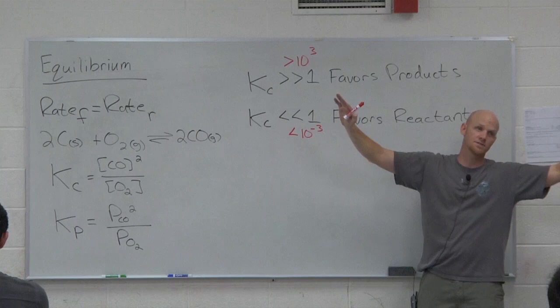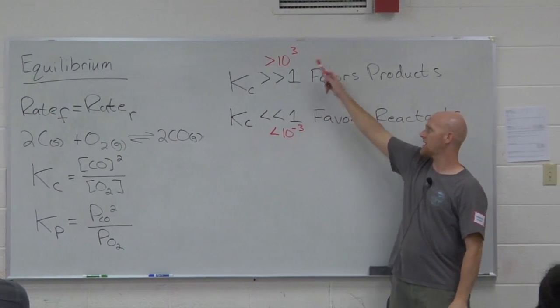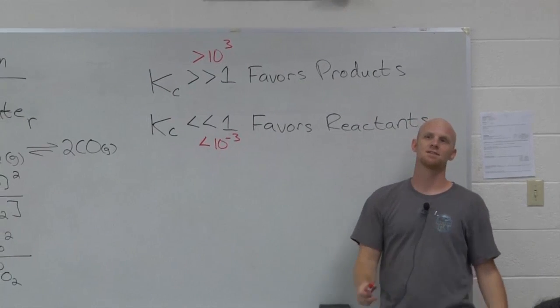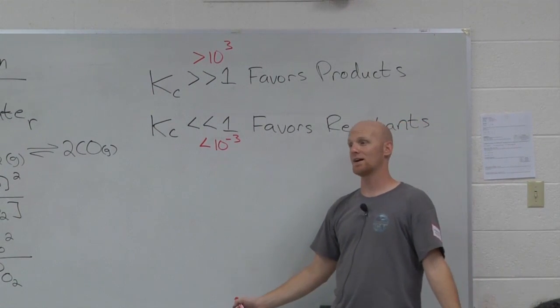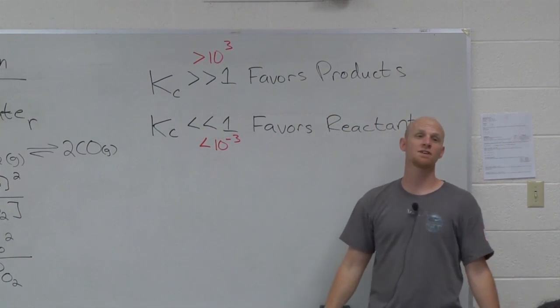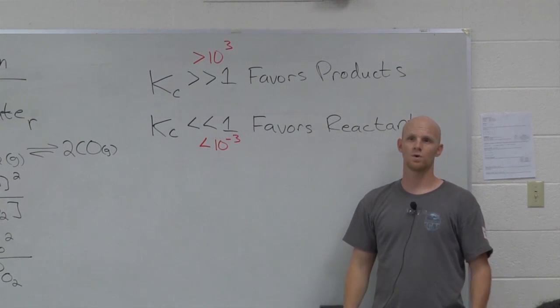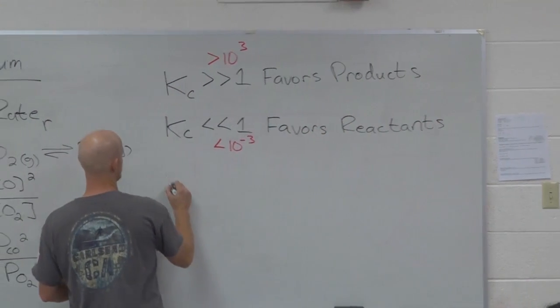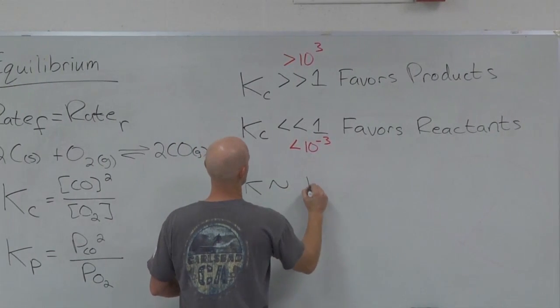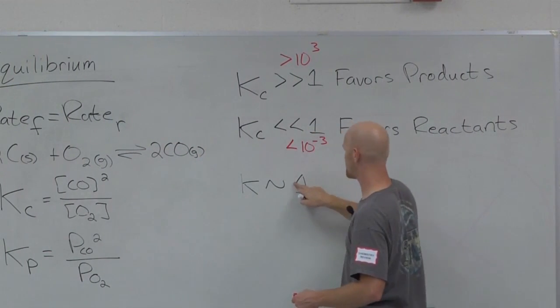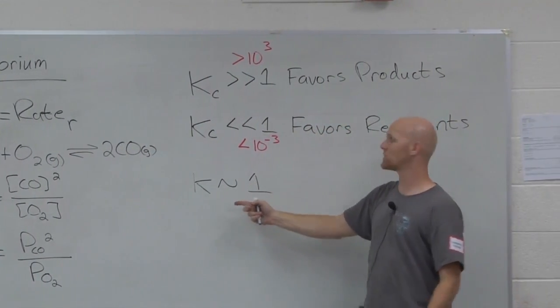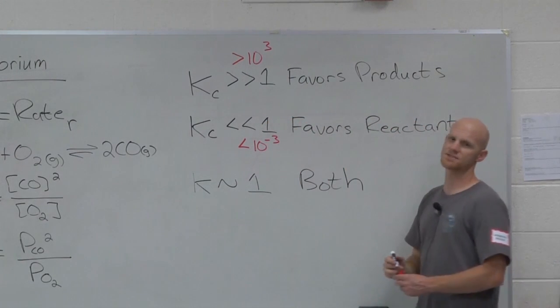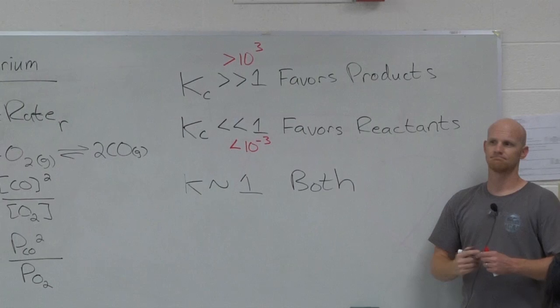The truth is though, the truth is that you can't really define a set cutoff for every reaction to be different for different reactions. So they just kind of overestimate and say, well, if you're beyond these, you're for sure okay. If a K is bigger than a thousand, that's definitely favoring the products. If it's smaller than one one thousand, definitely favors the reactants. So they're just playing it safe. So just FYI.